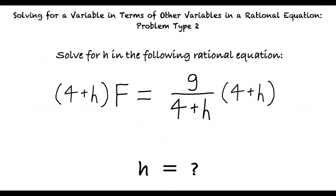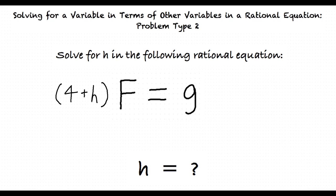4 plus h over 4 plus h is equivalent to 1. So the right side of our equation simplifies to g. Next we should distribute the f on the left side, right? Not just yet. Recall that we are attempting to solve for h, so we should try to keep h as the only variable on its side of the equation.